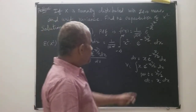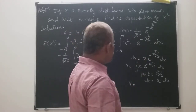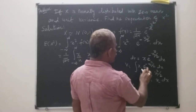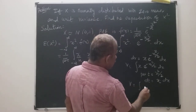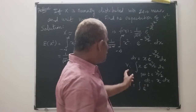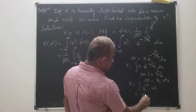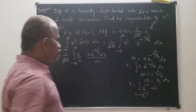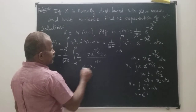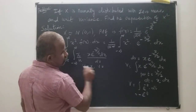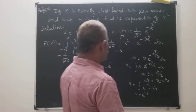Therefore, v is equal to the integration of x into e to the power minus x squared by 2 dx. Put t = x squared by 2. Then dt = x dx, so v equals minus e to the power minus t, which is minus e to the power minus x squared by 2.